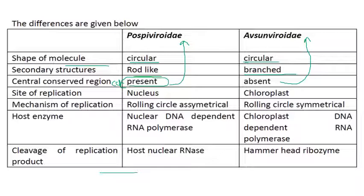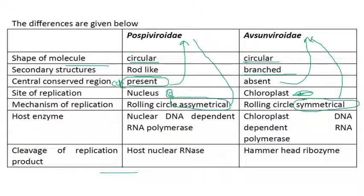The site of replication of Pospiviroidae is the nucleus, whereas the site of replication of Avsunviroidae is the chloroplast. The replication mechanism is asymmetrical rolling circle for Pospiviroidae and symmetrical rolling circle for Avsunviroidae.